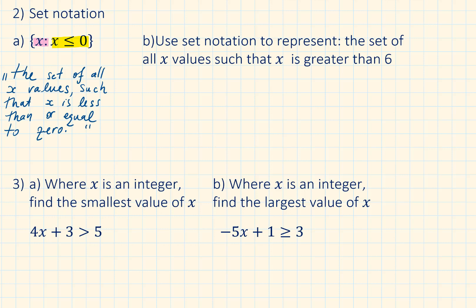In part b we are going to do the opposite — we are going to use set notation, using these curly brackets, to represent the set of all x values such that x is greater than 6. And we close the set notation.